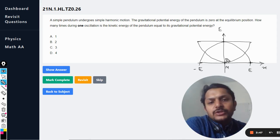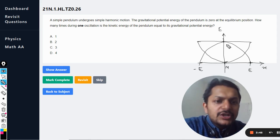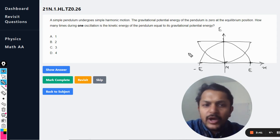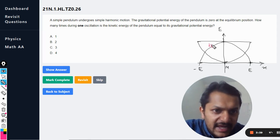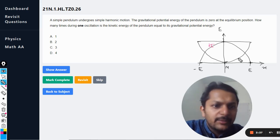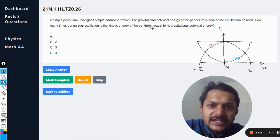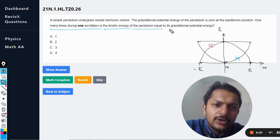At the mean position, kinetic energy is maximum, so this is the kinetic energy graph and I'm writing it in pink color. The blue one is for the potential energy. Now the question is, how many times during one oscillation is the kinetic energy of the pendulum equal to the gravitational potential energy?